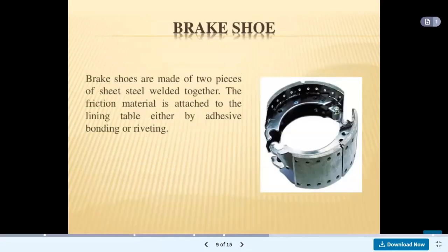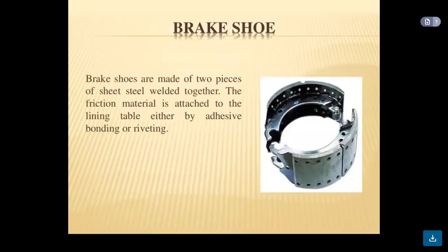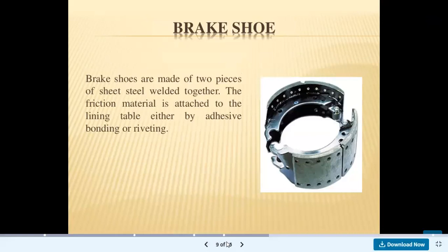Observing the brake shoe: brake shoes are made of two pieces of sheet metal welded together. The friction material is attached to the lining table either by adhesive bonding or riveting.